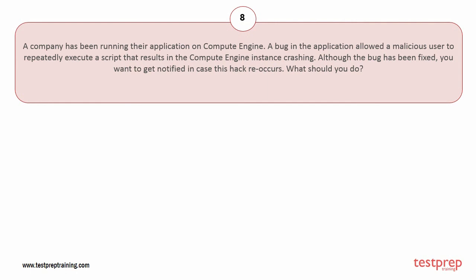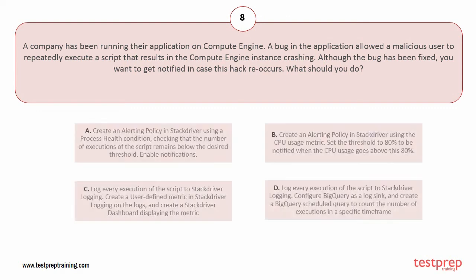Question number eight: a company has been running their application on Compute Engine. A bug in the application allowed a malicious user to repeatedly execute a script that results in the Compute Engine instance crashing. Although the bug has been fixed, you want to get notified in case this hack reoccurs. Options: A) create an alerting policy in Stackdriver using a process health condition, checking that the number of executions of the script remains below the desired threshold, and enable notifications. B) create an alerting policy in Stackdriver using the CPU usage metric, set the threshold to 80% to be notified when CPU usage goes above 80%.